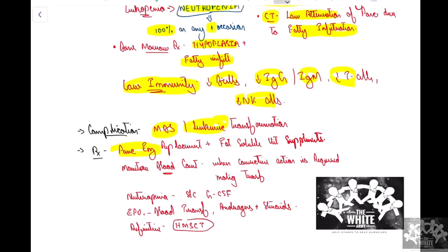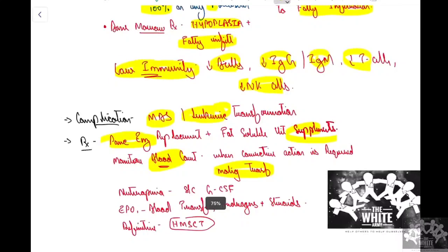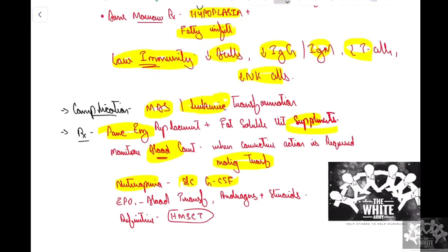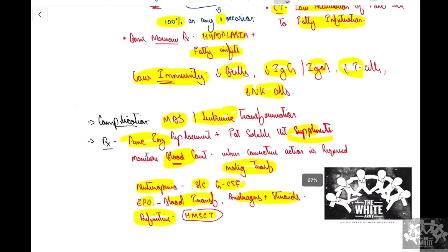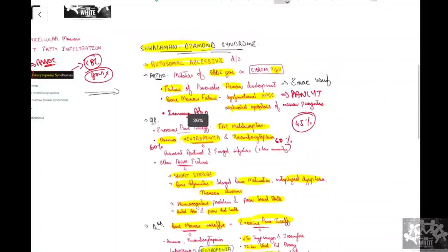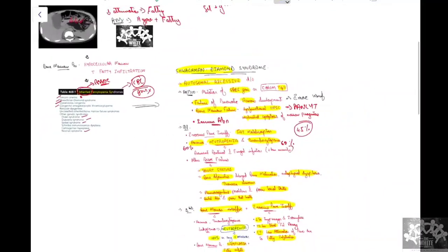Treatment includes pancreatic enzyme replacement along with vitamin supplements. Blood counts must be monitored regularly as the patient may require transfusions or counts may become malignant. For neutropenia, subcutaneous G-CSF can be given; erythropoietin, blood transfusions, or androgens and steroids can be used to increase counts. The definitive treatment is hematopoietic stem cell transplantation. This week's case was Shwachman-Diamond syndrome — hope it was useful!